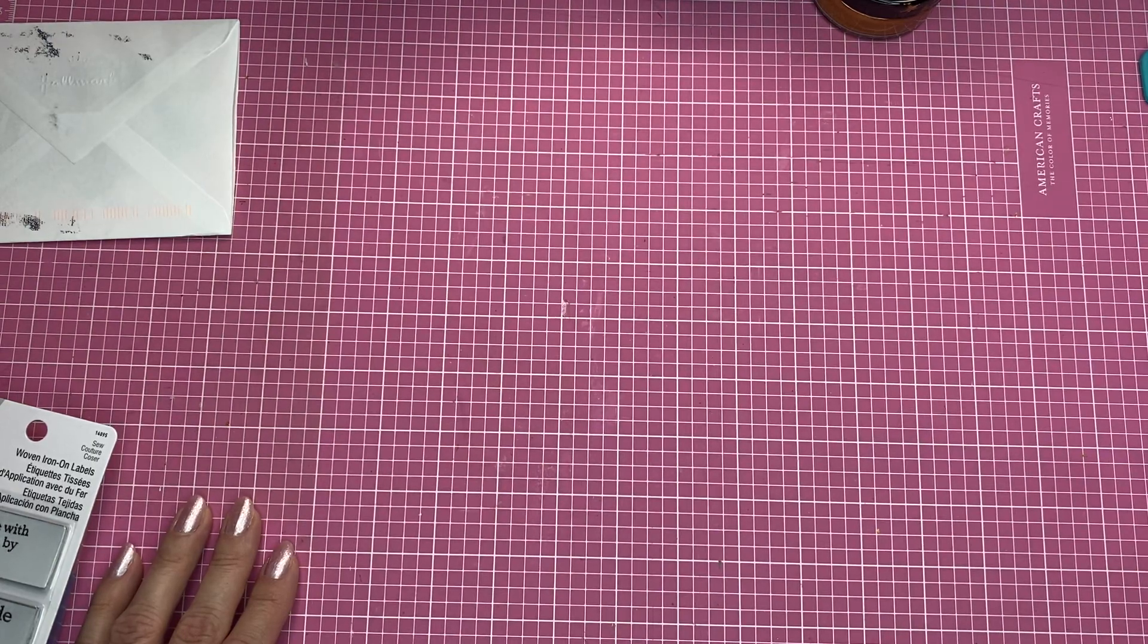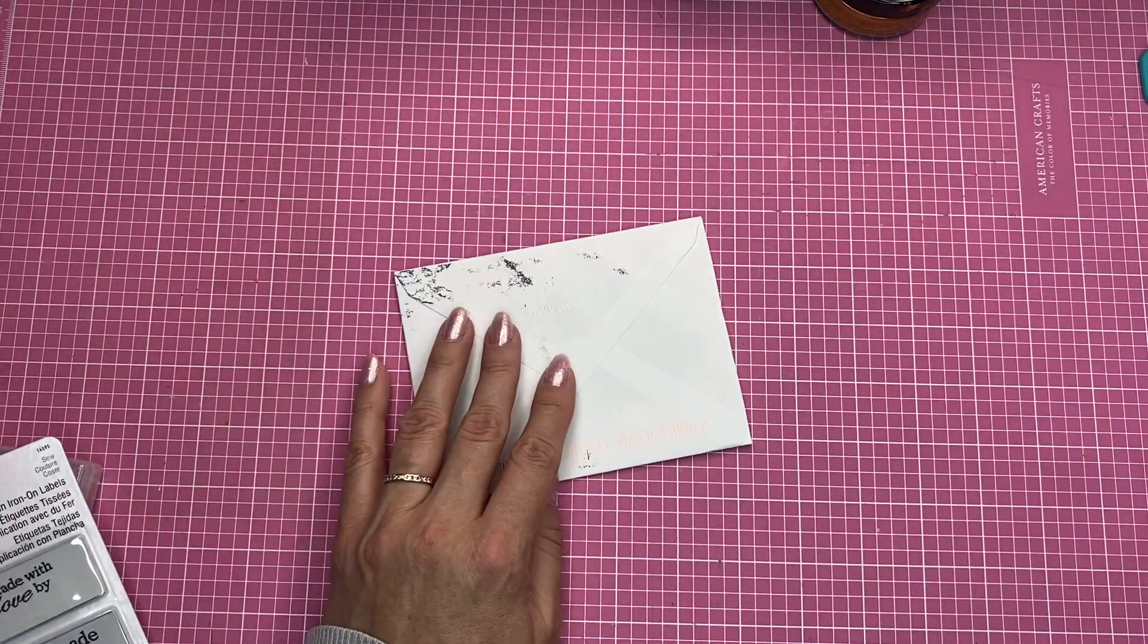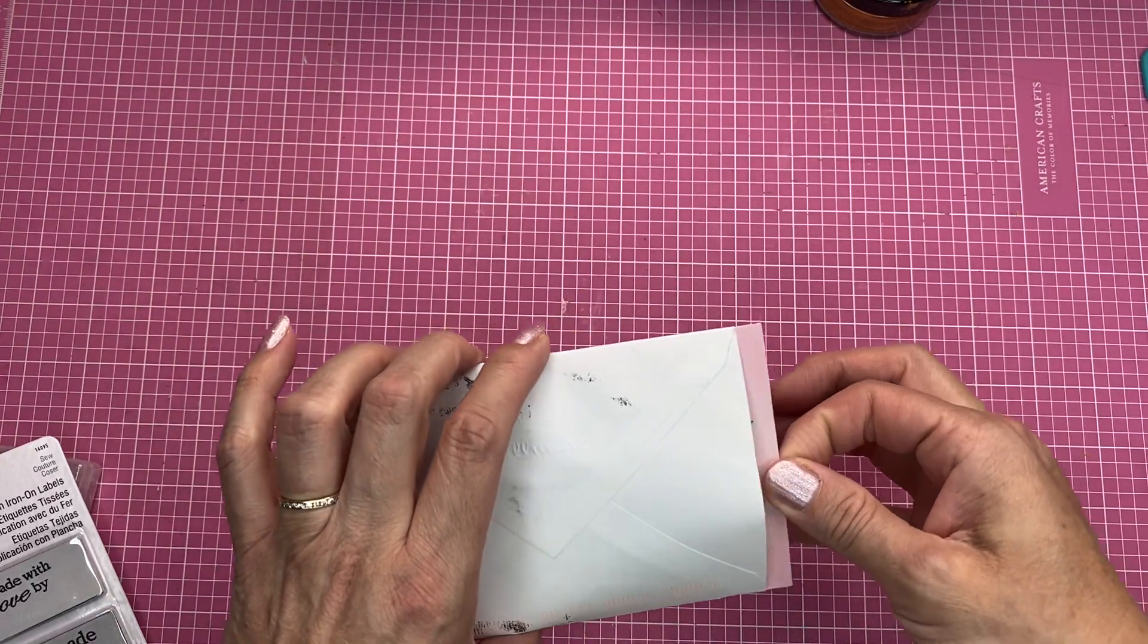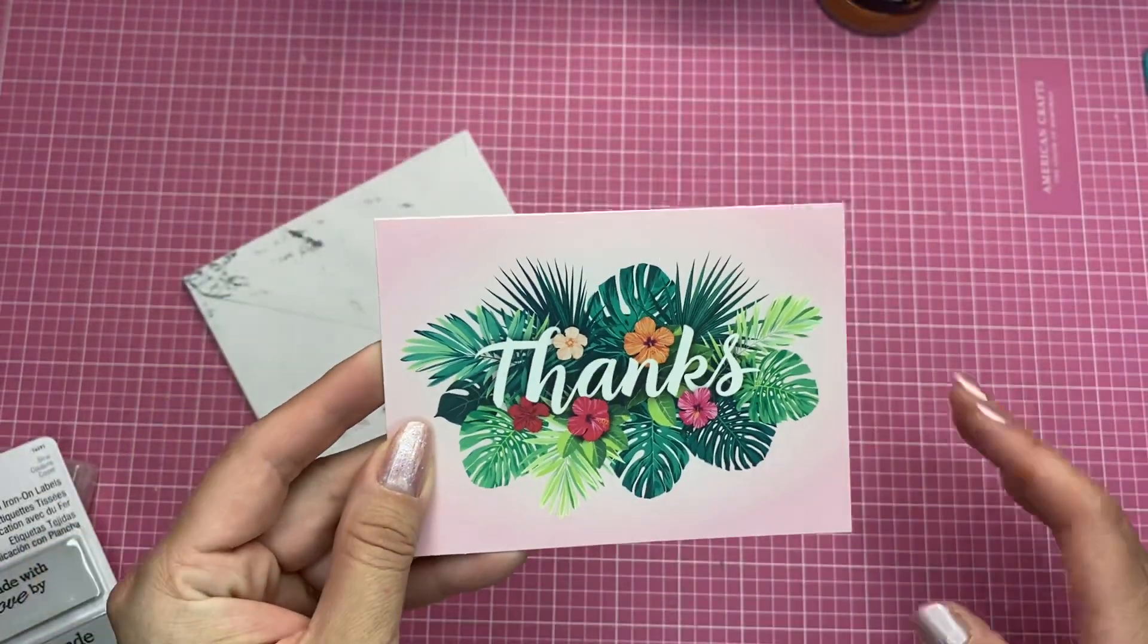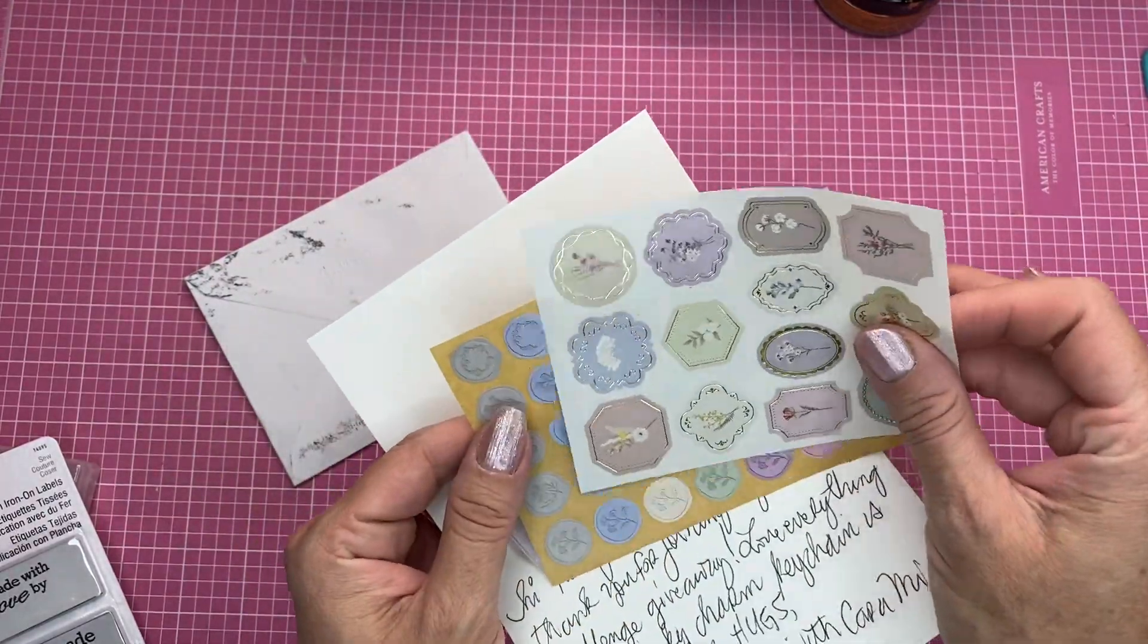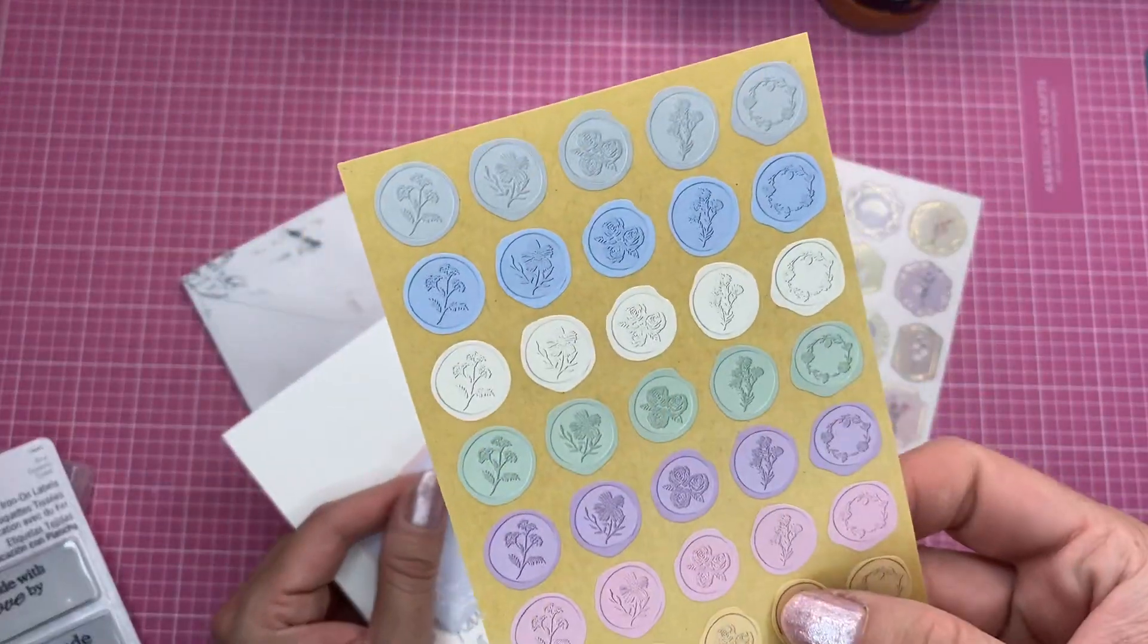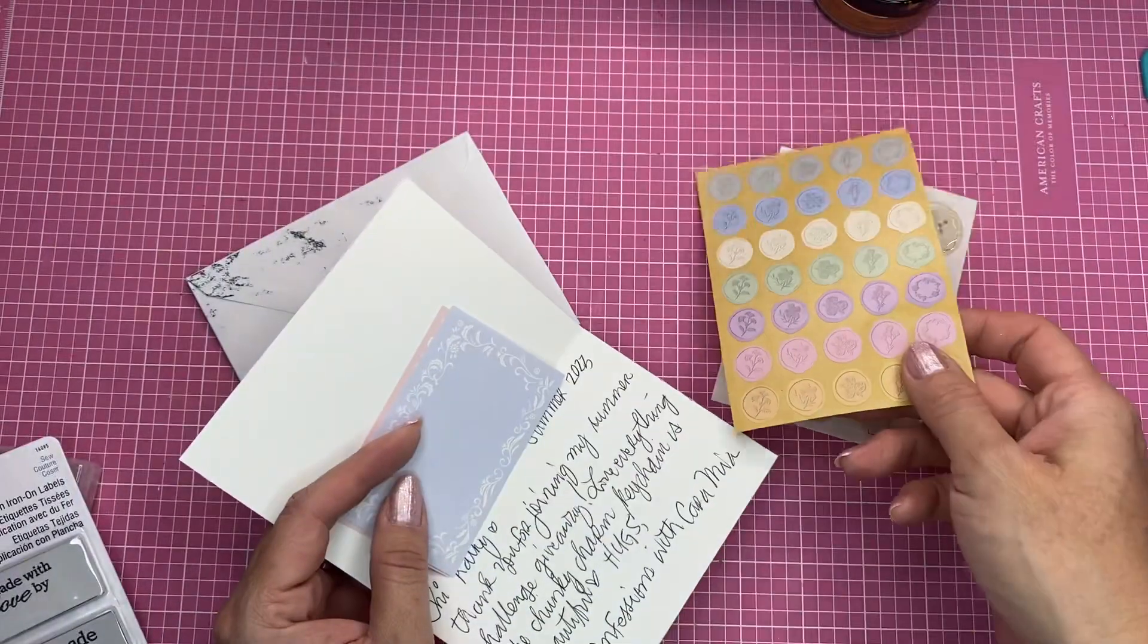I received a card from Caramia from Paper Confessions with Caramia's Corner, which is here. I already opened the side so we're going to take it out and see what she sent. Oh, how beautiful! Look, it's a thank you card. And she sent some stickers, I think. So cool! These are precious, look how beautiful these are, super dainty and super delicate. I love those. And these are stickers but they resemble like wax seals. Look how tiny and beautiful.